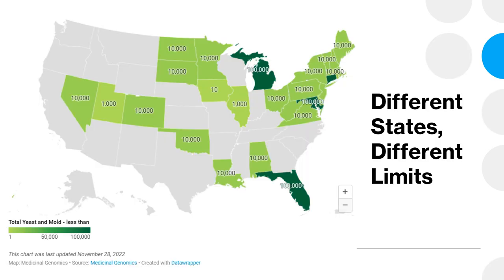Now that we know what total yeast and mold is, let's talk about how this analysis is used across the country. As a cannabis lab in Florida, we are required by law to test all final products for total yeast and mold. The regulatory limit for this analysis is 100,000 colony forming units per gram in flower. These limits will change depending on the product type, but for the purposes of this presentation we're going to focus on flower, so the regulatory limit I will be referencing throughout is 100,000 CFU per gram.